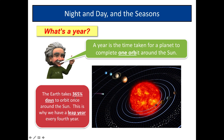The Earth takes 365 and a quarter days to orbit once around the Sun. That quarter is very, very important. Because it's a quarter, you can't have a quarter day, so they add up the quarters — four years' worth of quarters equals one day. This is why we have a leap year every fourth year, with 366 days, to make up for all the quarters.